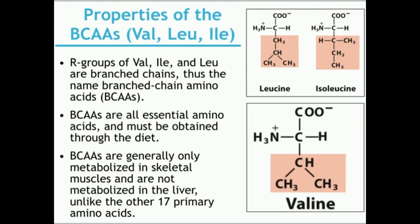The BCAAs are essential amino acids. Essential amino acids cannot be synthesized by humans — they have to be obtained through the diet. And all three of these BCAAs — valine, leucine, and isoleucine — are essential.